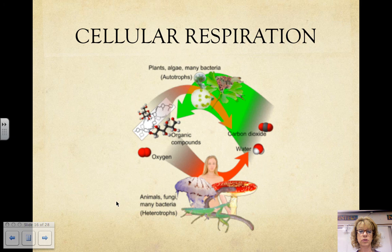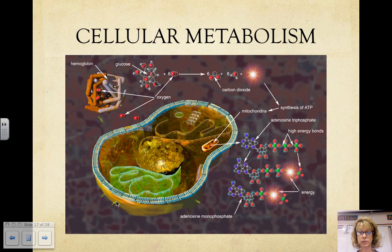Cellular respiration involves many steps, each one a different chemical reaction — therefore it's like a slow burn. Some of the energy released during cellular respiration is released as heat, but most of it is stored in ATP molecules. Cells use ATP as an immediate source of fuel. Cellular metabolism is all of the endergonic and exergonic reactions that occur in cells, and there are thousands of them.